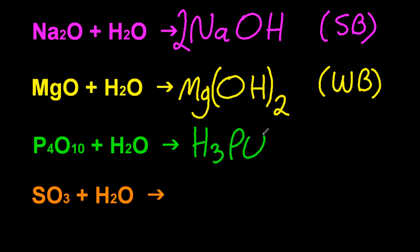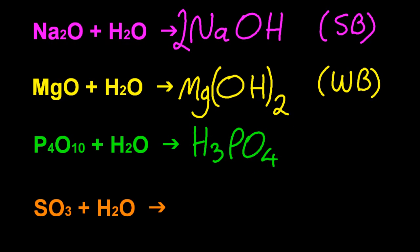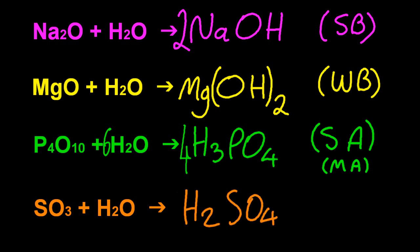What acid has phosphorus in it? It's got to be acidic, well, phosphoric acid. H3PO4. And what acid has sulfur in it? Sulfuric acid. Now, you could argue that phosphoric acid is a strong or a medium acid. Either of those is acceptable. But sulfuric acid is one of the strong acids you need to know.